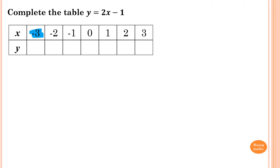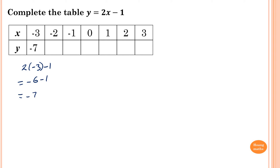When x is minus 2, every time you see x, you replace it with minus 2. So when x is negative 3, we get 2 lots of minus 3, minus 1. So 2 times minus 3 is minus 6, minus 1. Minus 6 minus 1 is minus 7.